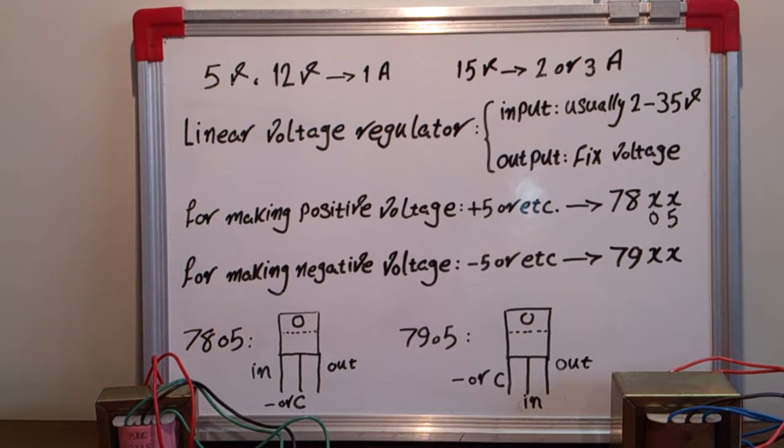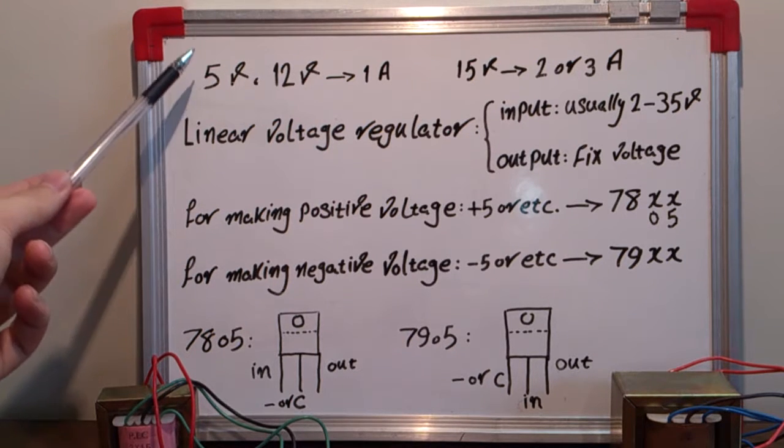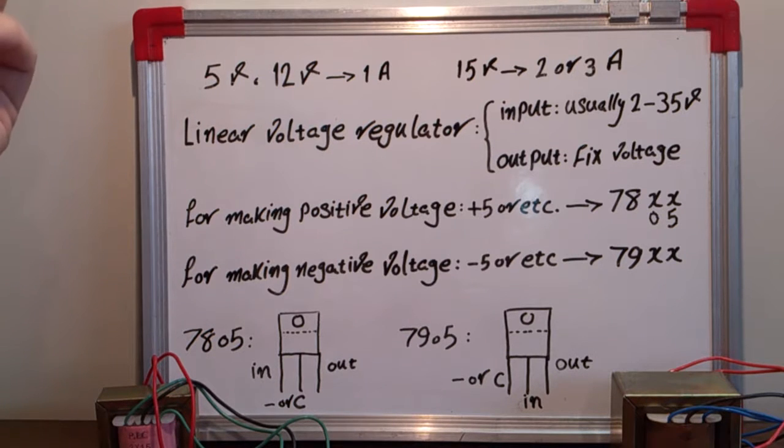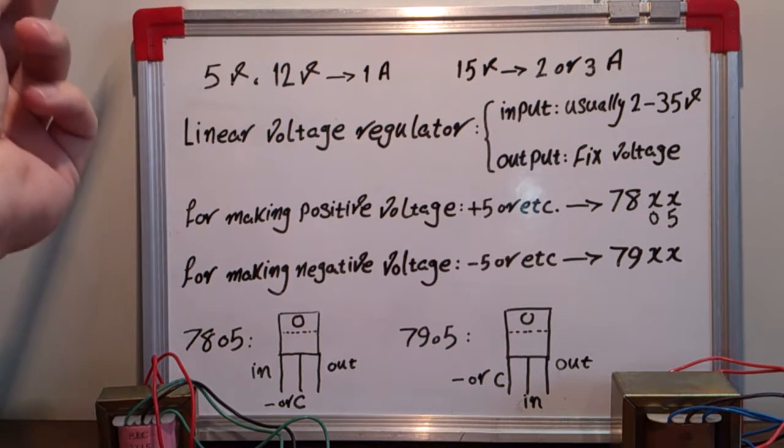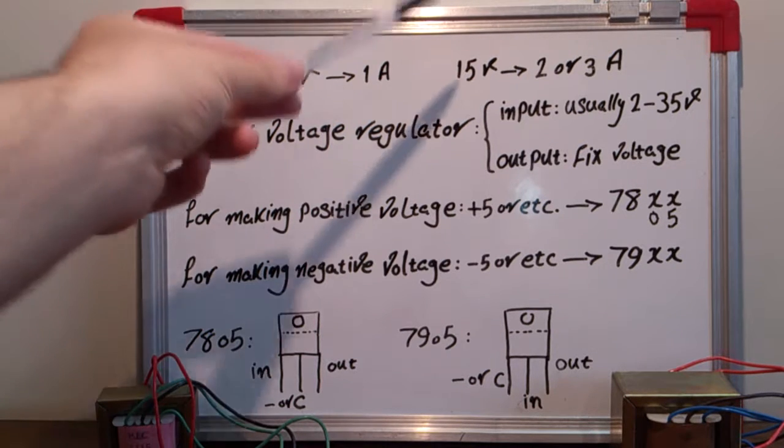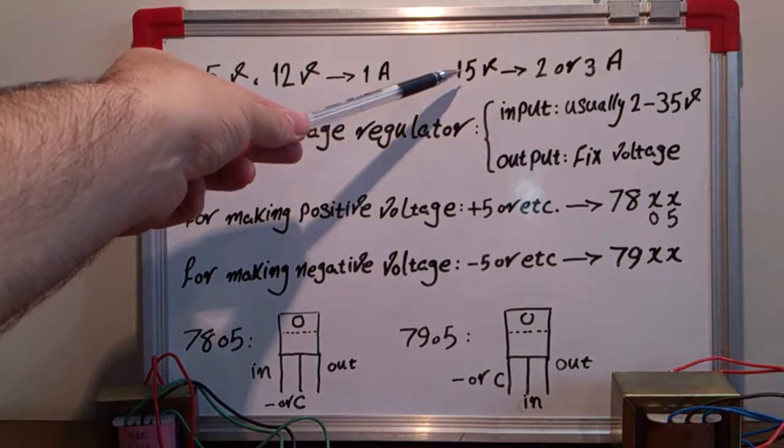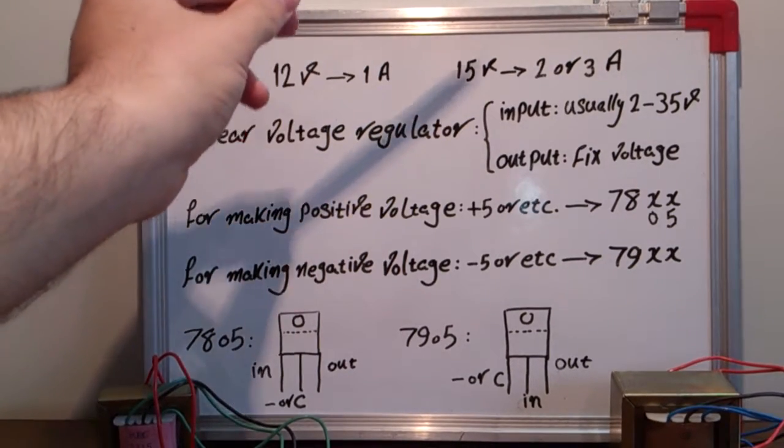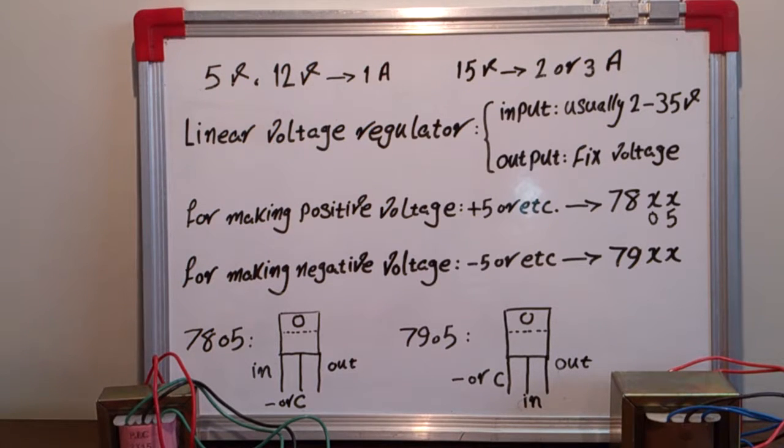In this case, we need some typical voltages for supplying our circuit. First of all, one of the critical voltages is positive and negative 5 volts. Another one is positive and negative 12 volts at 1 ampere for supplying the control circuit, and positive and negative 15 volts at 2 or 3 amperes for supplying the IGBTs or MOSFETs for switching.